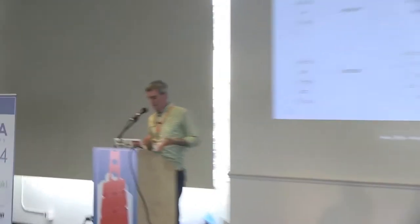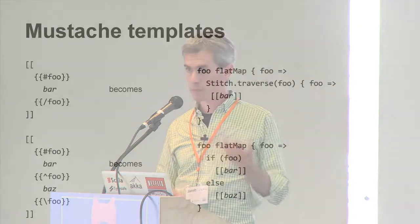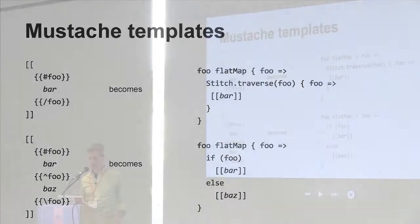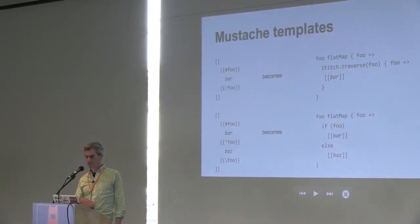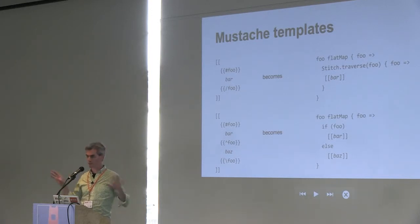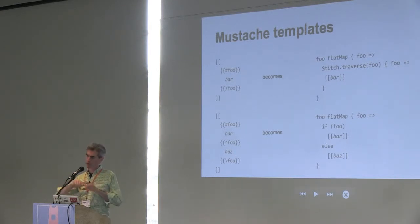This is a totally different application. The talk about Play yesterday mentioned the issue of how you compose a web page out of lots of independent components. In one of the applications of Stitch at Twitter, we had Mustache templates and we wanted to independently compose these asynchronous components that were making RPC calls. What we did here is translate these Mustache templates into a Stitch query. Then we execute the whole thing and achieve batching across independently written pieces of the template. We can just plug together things which really didn't know anything about one another, but still get batching across those components and completely concurrent execution.